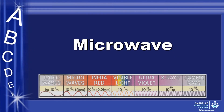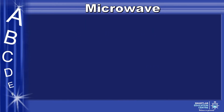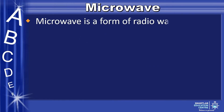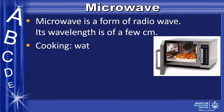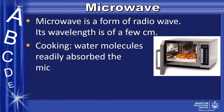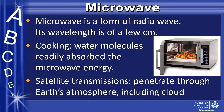Next, microwave. Microwave is a form of radio wave. Its wavelength is a few centimeters. Microwave is used in cooking — water molecules readily absorb the microwave energy. Microwave is also used for satellite transmissions, because microwave can penetrate through Earth's atmosphere, including clouds.